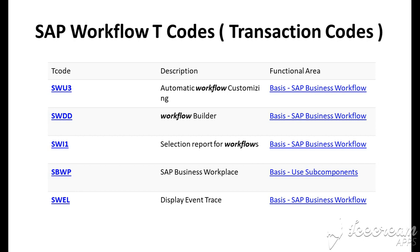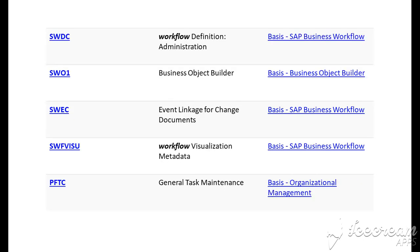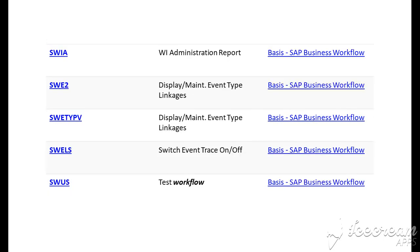SW DC is for workflow definition administration. SW01 is for Business Object Builder. SW EC is for event linkage for change documents. SW FVISU is for workflow visualization metadata. FTC is for general task maintenance.